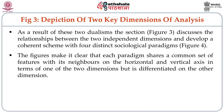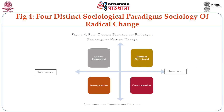The figure makes it clear that each paradigm shares a common set of features with its neighbours on the horizontal and vertical axis — one dimension will be different and one dimension will be similar, so the porousness of the quadrants is quite high, but the notions of the quadrants are quite different. There are four distinct sociological paradigms: on the objective and regulation side is the functionalist paradigm; from the subjective and regulation is the interpretive paradigm; from the subjective to radical change is the radical humanist; and from radical change and objective is the radical structuralist.